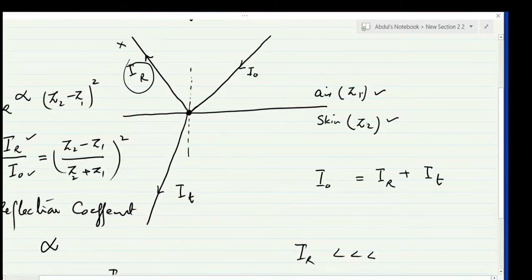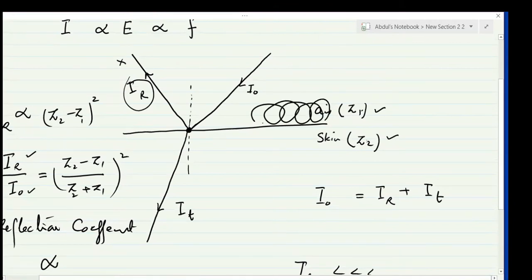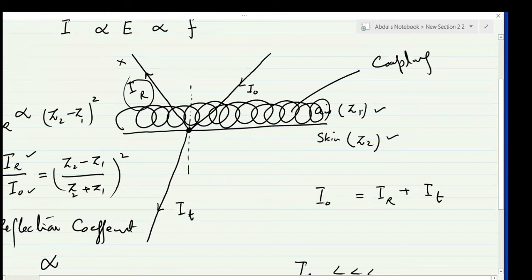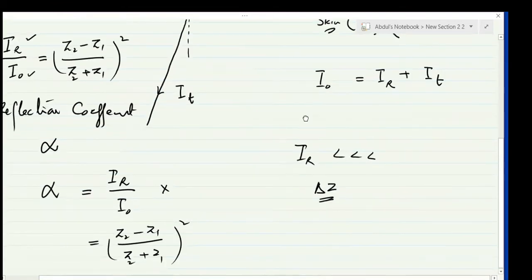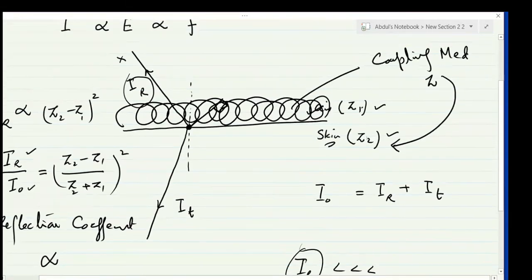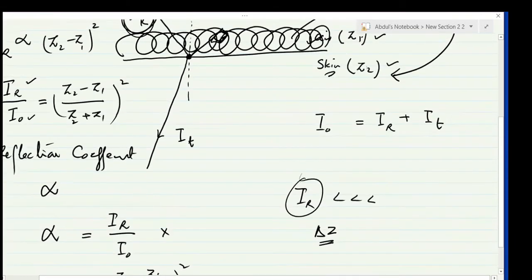To reduce this difference, the radiologist applies a gel on the skin. This gel is called the coupling medium, and its acoustic impedance is approximately equal to the skin's acoustic impedance. The ultrasound probe — the crystal, silica orthosilicate — is placed inside the gel, so the difference between the acoustic impedances is minimum and the reflected intensity is minimum.